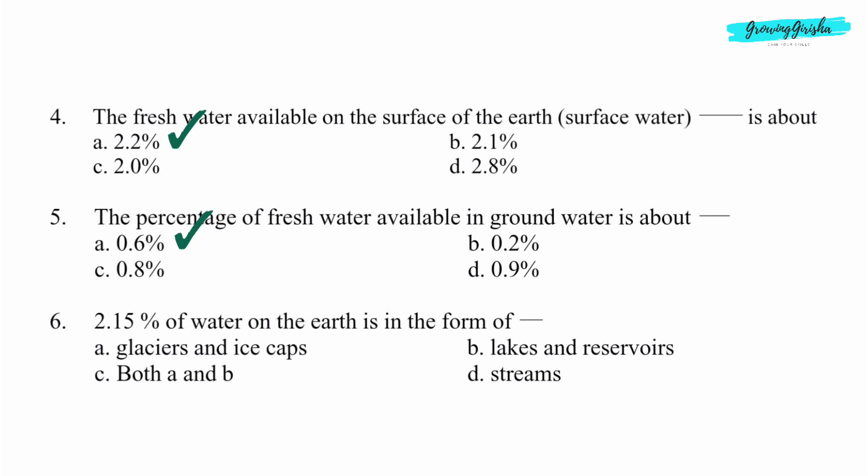Question 6. 2.15% of water on the earth is in the form of dash. Option A: Glaciers and ice caps.